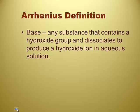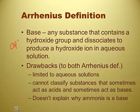He also comes up with a definition of a base: any substance that contains a hydroxide group and dissociates to produce a hydroxide ion in an aqueous solution. Hydroxide is one of the polyatomic ions we've been using all year. There are some drawbacks to Arrhenius's definition — it's limited only to aqueous solutions. You also can't classify substances that sometimes act as acids and sometimes act as bases. And it doesn't explain why ammonia is a base. Ammonia is NH₃, the most famous base of all, but there's no hydroxide ion anywhere there, and it's a gas.